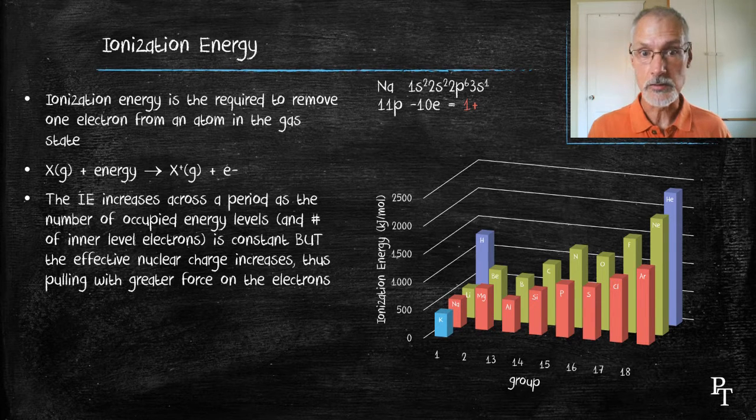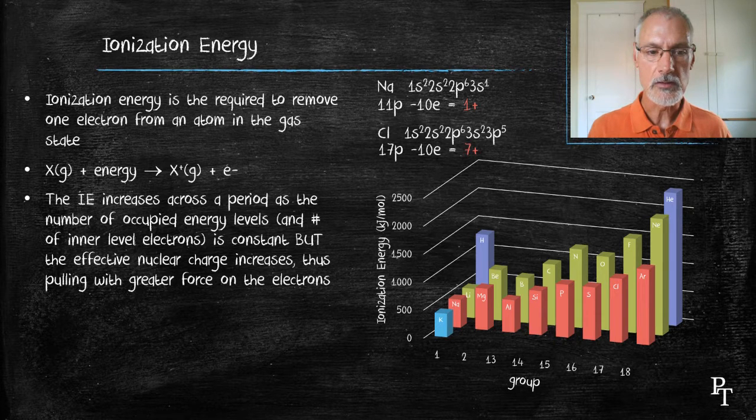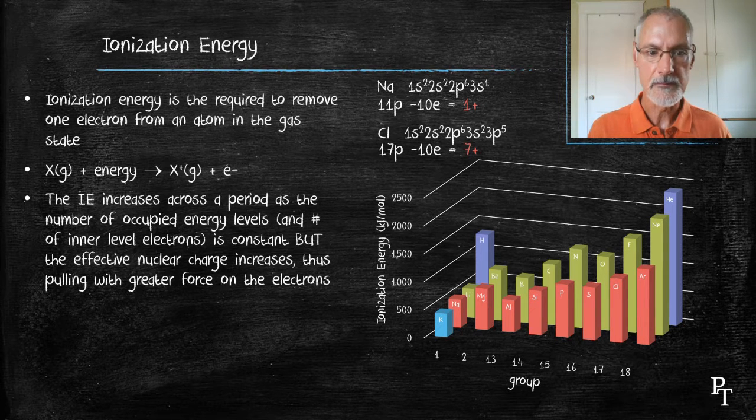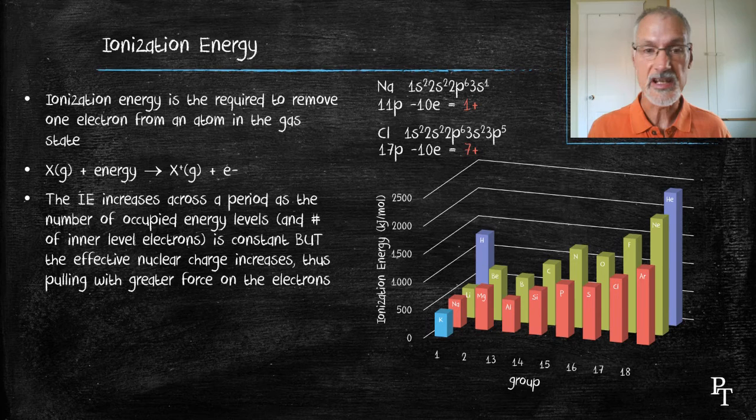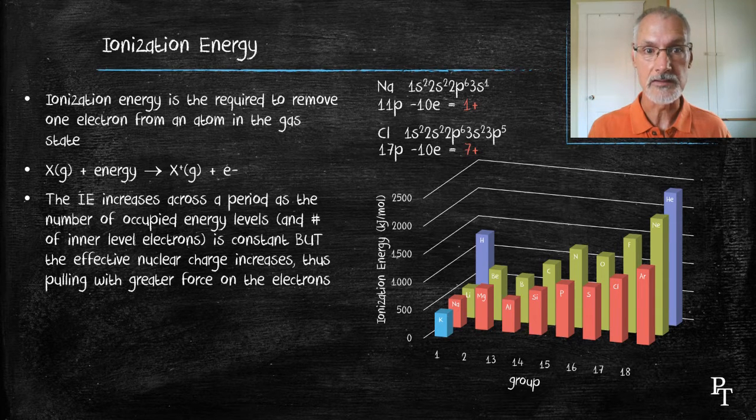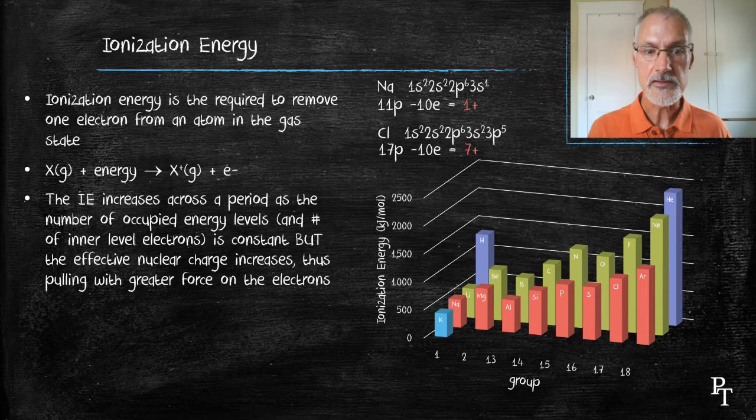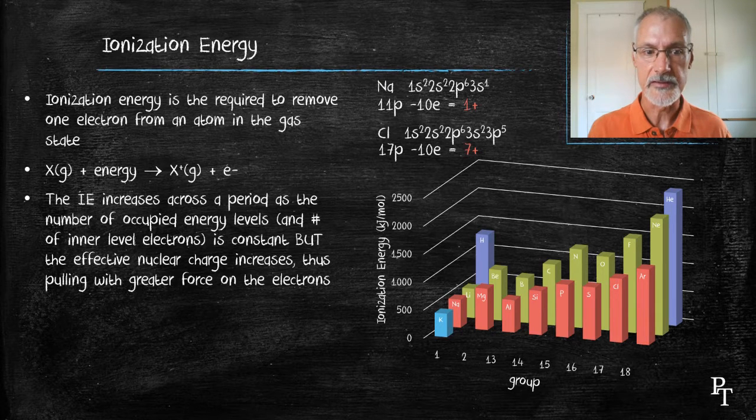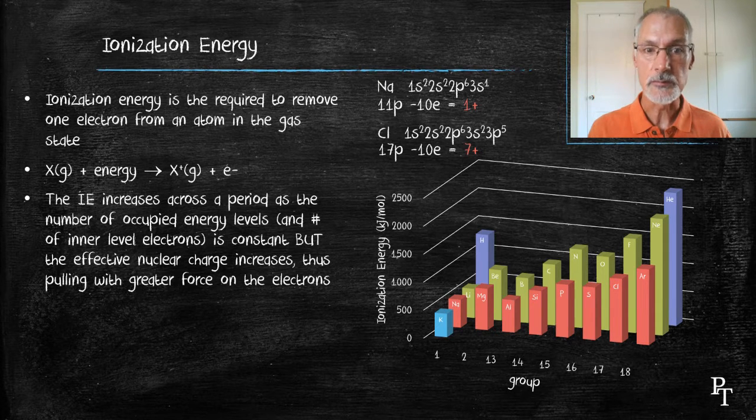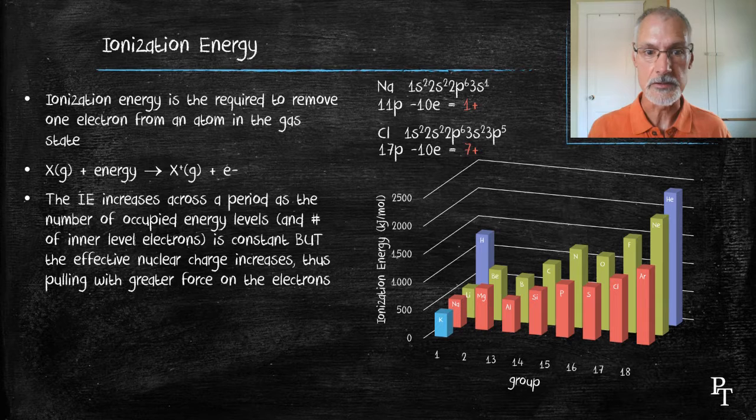Moving across to chlorine that's in the same period, chlorine has 17 protons. Its configuration shows that it has exactly the same number of inner level electrons. The 3s2 and the 3p5, those are the valence electrons. So we see here a 7 plus charge for the effective nuclear charge.